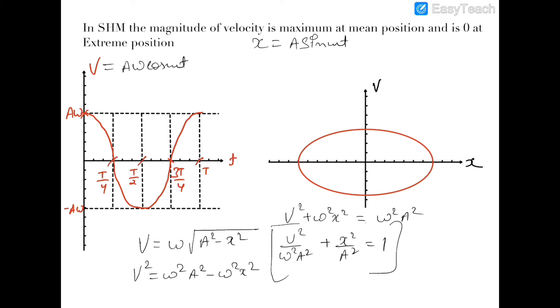This is an equation of an ellipse. The semi-axis along the velocity direction is omega a and the semi-axis along the displacement direction is a. The maximum velocity is a omega and the minimum is minus a omega; the displacement ranges from plus a to minus a. So the graph of velocity with displacement is an ellipse.